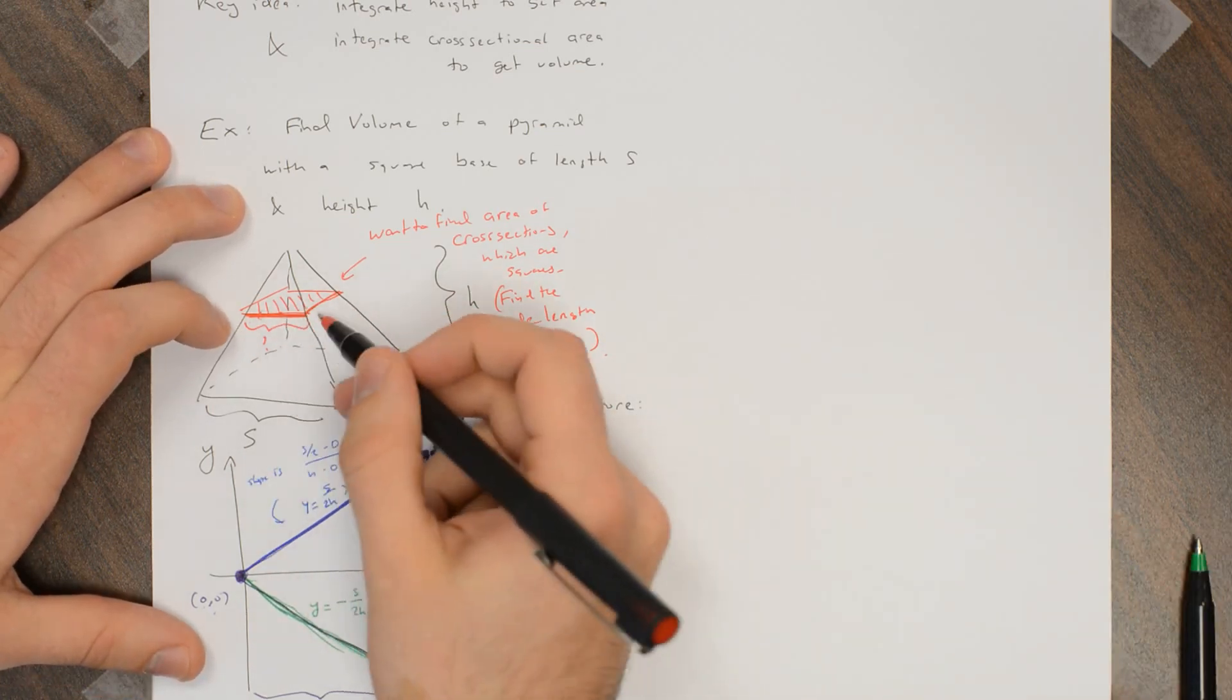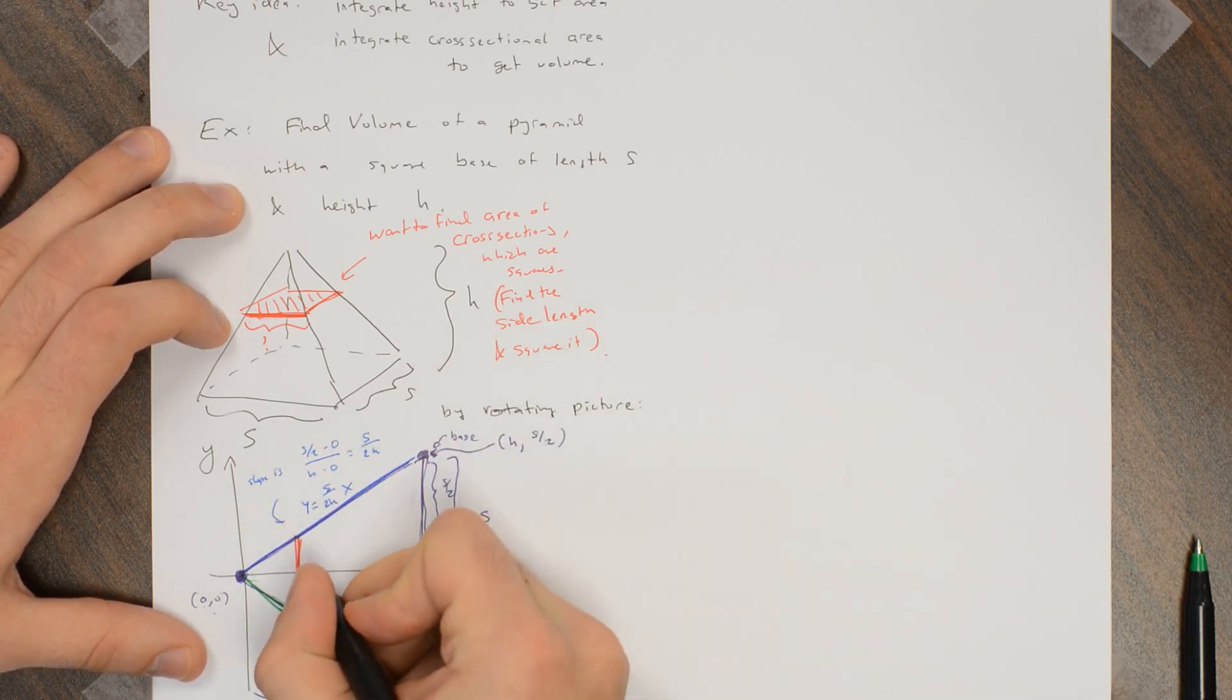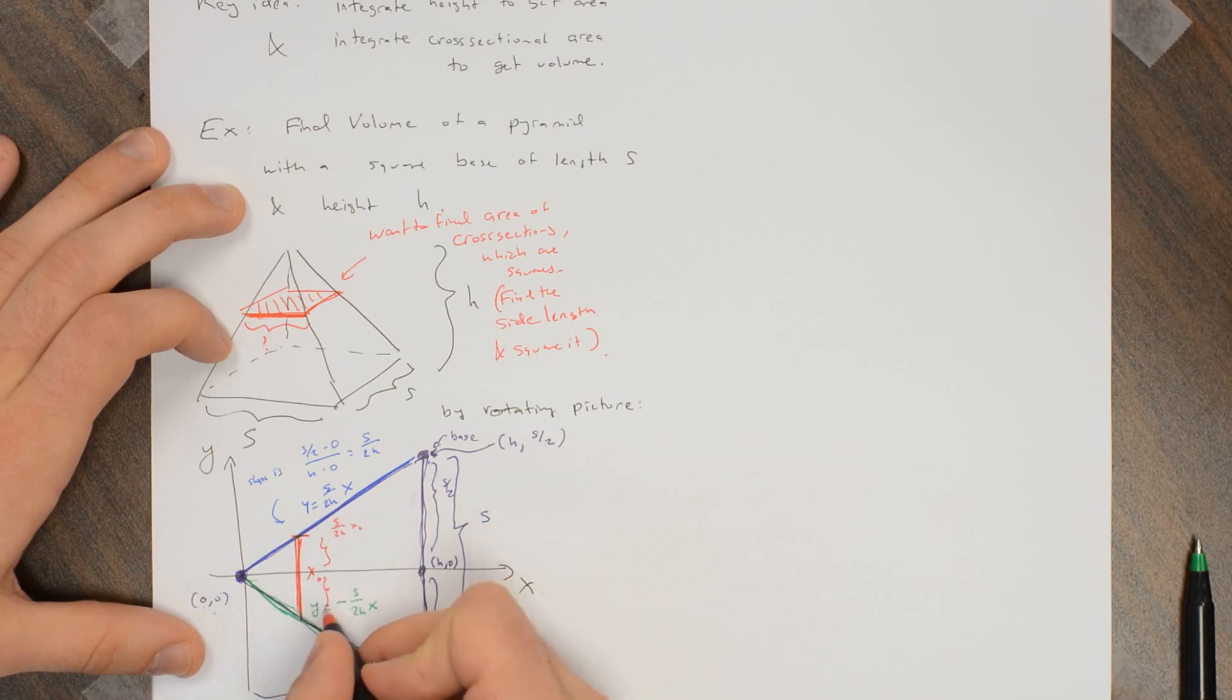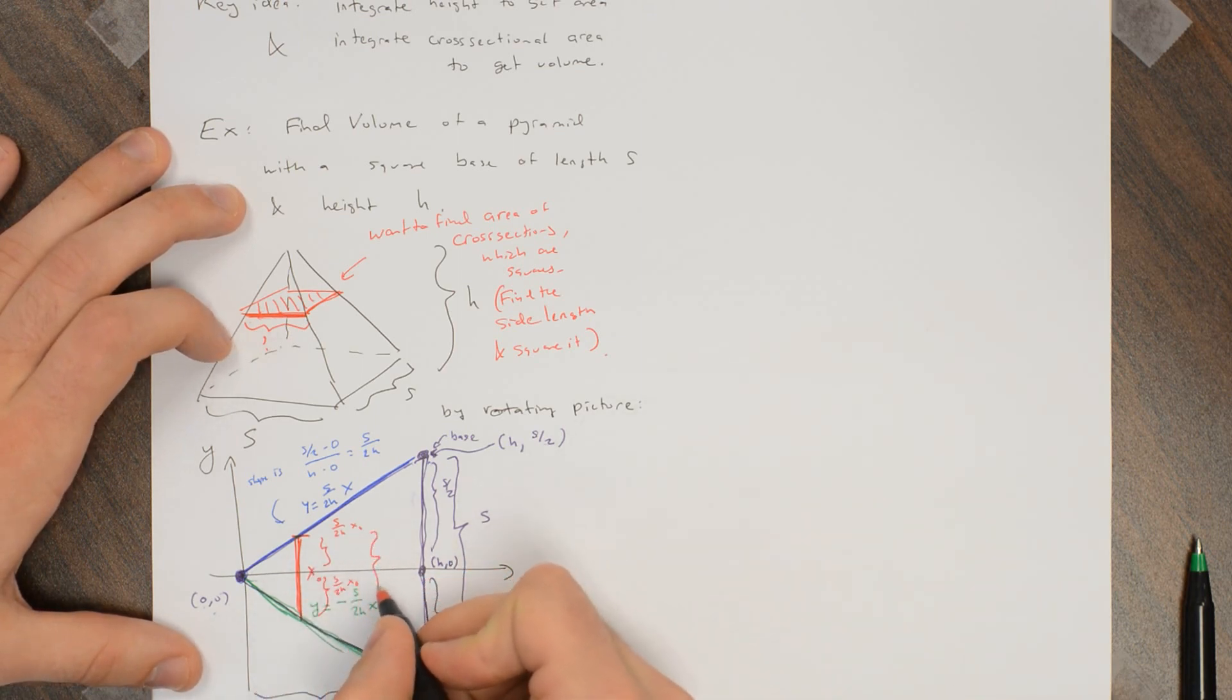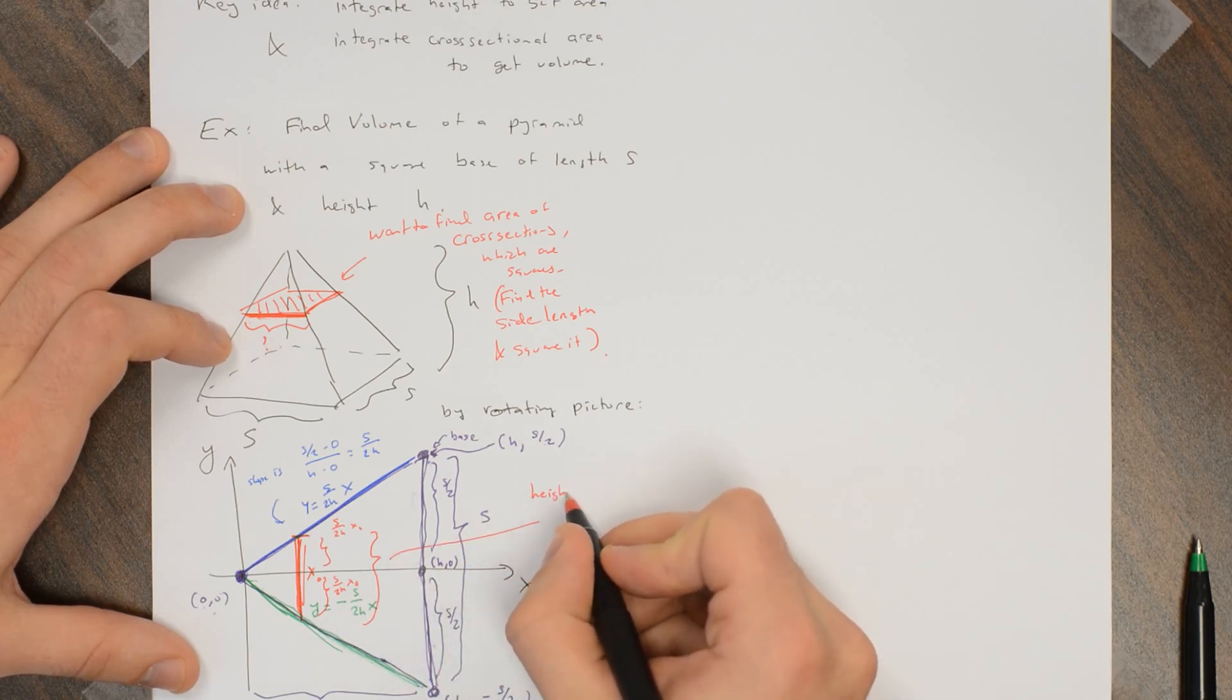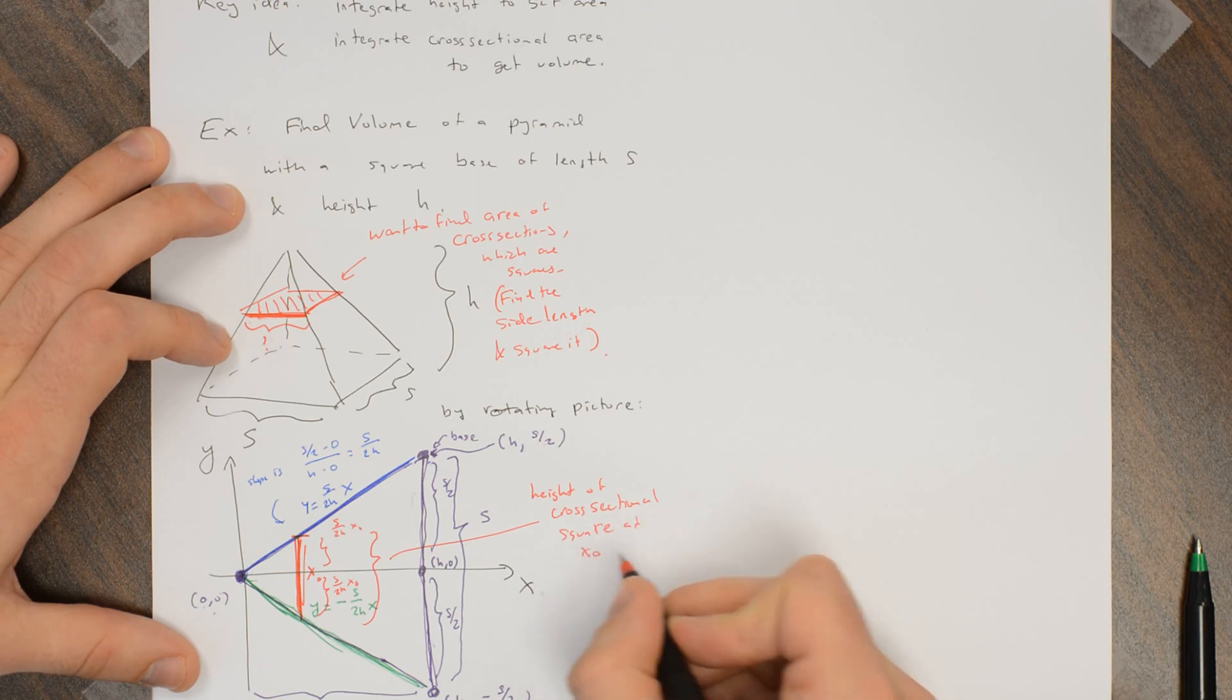So the heights of these cross-sectional squares, like if this is x naught here, then this distance is s over 2h times x naught, and this distance is also s over 2h times x naught because you go down. So putting this together, this height of the cross-sectional square at x naught is s over h times x naught.